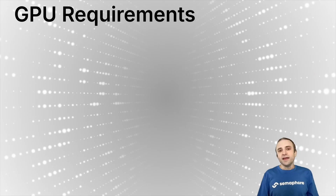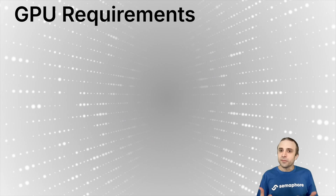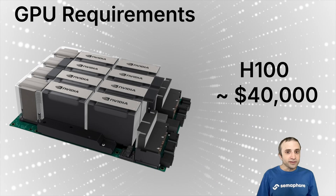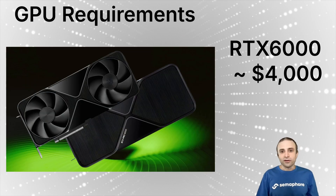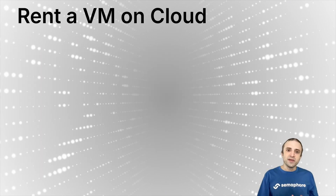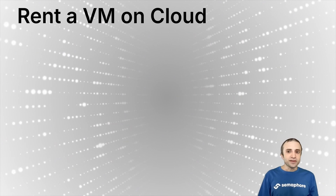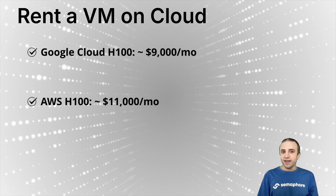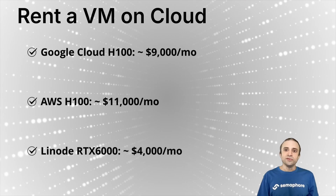How much would it cost to run the biggest model on your own cloud machine? You need pretty powerful hardware. For a data center-grade setup, OpenAI recommends using an H100. Or you can use a Blackwell RTX 6000, which is a consumer-grade GPU. A dedicated virtual machine can provide the right balance of convenience, privacy, and cost. On Google Cloud or AWS, an H100 GPU-equipped server can cost between $9,000 and $11,000 per month, and a dedicated RTX 6000 GPU machine on Linode can go up to $4,000 per month.